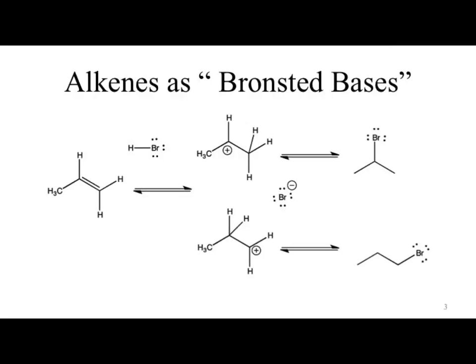Where we left off last week was looking at Bronsted bases. We started with the alkene and hydrobromic acid. HBr is a strong acid; hydrogen is less electronegative than bromine, so the electrons spend most of their time on bromine, making that hydrogen very positive. What we can do is share electrons from our alkene with the hydrogen. That hydrogen now has too many bonds, so we break the bond between hydrogen and bromine — all in a single step.